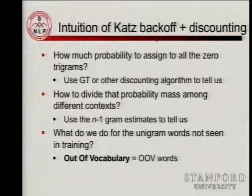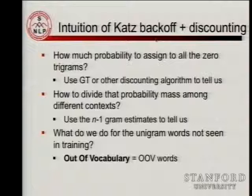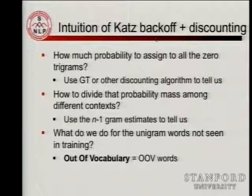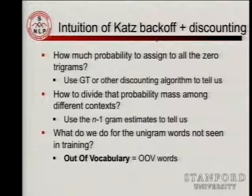There's a catch: this works fine for words you've seen somewhere but not in a particular context — you can use their unigram counts. But what about words you never saw in training data at all? They're referred to in the speech and language world as OOV items — out-of-vocabulary items. We still need to do something about those, and I'll come back to that in a minute.